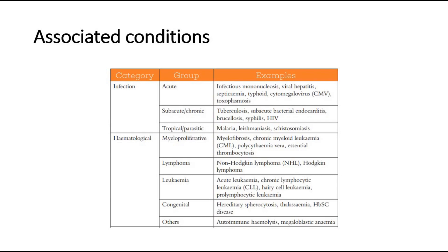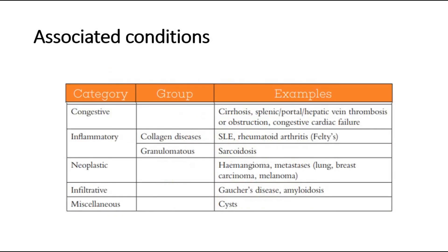Hematological causes can be subdivided into myeloproliferative, lymphoma, leukemia, congenital causes like hereditary spherocytosis, thalassemia, and others like autoimmune hemolysis or megaloblastic anemia. All these may cause splenomegaly, which is enlargement of the spleen.